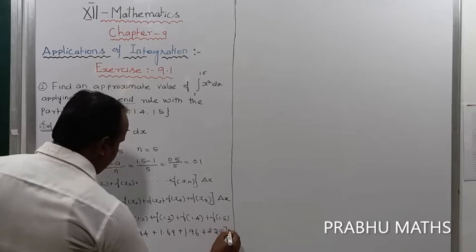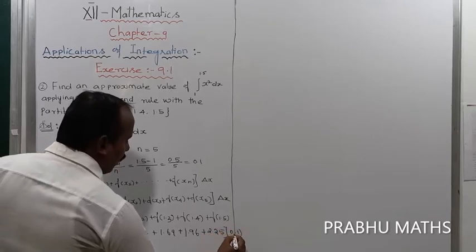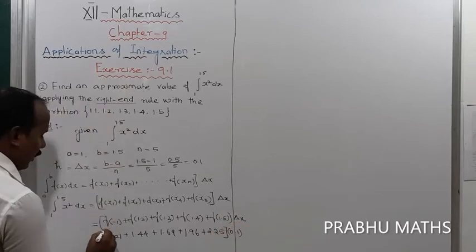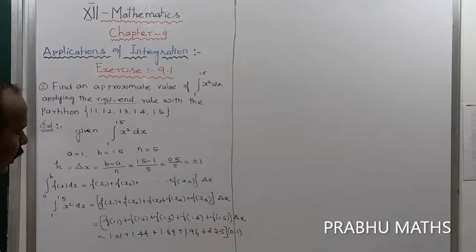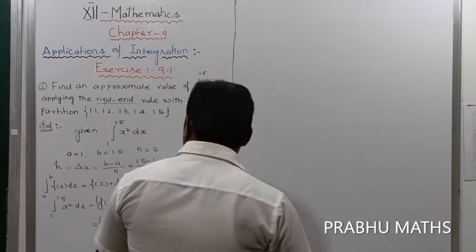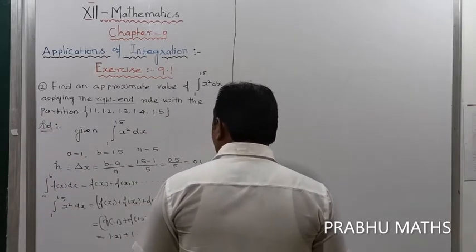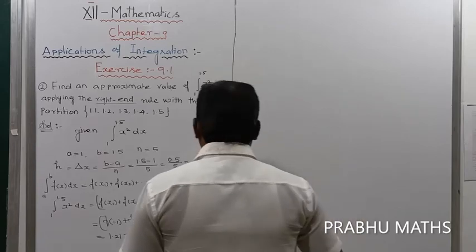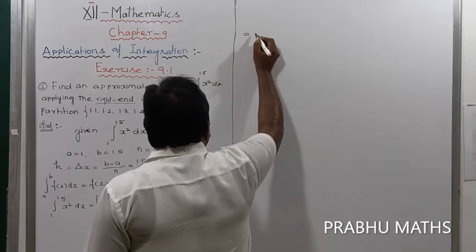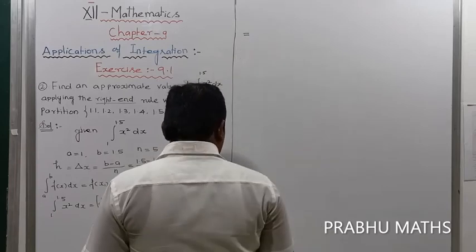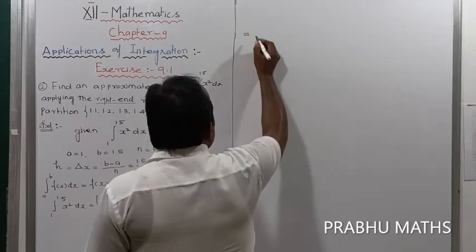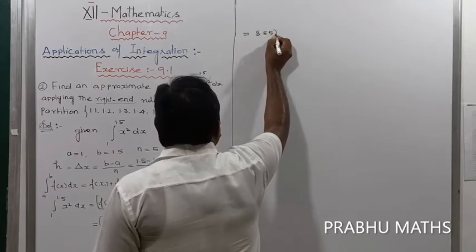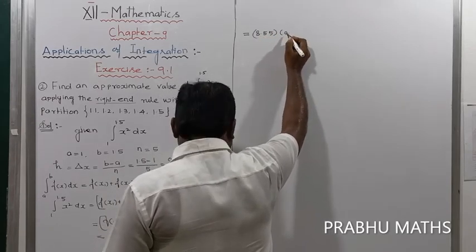Into delta x, which is 0.1. Adding 1.21, 1.44, 1.69, 1.96, and 2.25 gives 8.55. Then 8.55 into 0.1 equals 0.855.